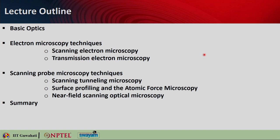Here is the lecture outline. We will look into some basic optics behind different nano characterization techniques and then specifically look into the techniques of electron microscopy. We will see the difference between scanning electron microscopy (SEM) and transmission electron microscopy (TEM), their applicable scenarios, and their resolution. Then we will look into scanning probe microscopy, including scanning tunneling microscopy, surface profiling, atomic force microscopy, and near field scanning optical microscopy. Finally, we will summarize all the different characterization techniques studied in this lecture.